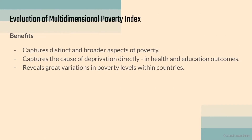What are some benefits of MPI? Similar to HDI, we're looking at evaluation. Firstly, it captures broader aspects of poverty. MPI is targeted specifically at poverty — not wide-scale development. So it looks at many aspects: standard of living, health, education — all of which determine whether people are stuck in poverty or can get out of it. It also captures the causes of deprivation directly.